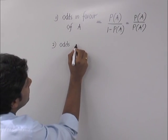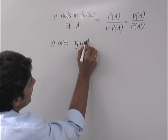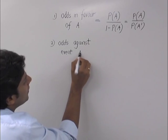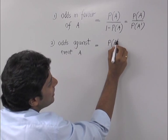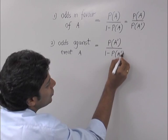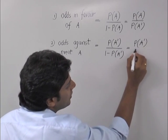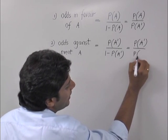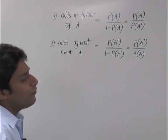Odds against event A. It is P of A dash upon 1 minus P of A dash. That means it is P of A dash upon P(A). These are the two formulae.